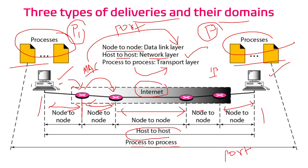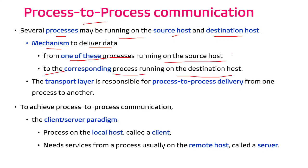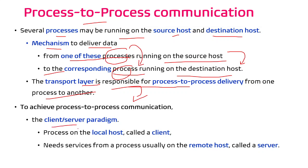In depth: at any moment of time, several processes may be running on the source host and several processes may be running on the destination host. I need a mechanism to deliver data from one of these processes running on the source host to the corresponding process running on the destination host — in specific, from a particular process at the source host to a particular process at the destination host. The transport layer is responsible for this process-to-process delivery. To achieve this process-to-process communication, the paradigm we implement is the client-server paradigm. The process on the local host is called the client.